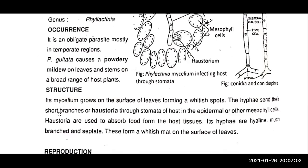The hyphae send their short branches called haustoria through stomata, accessing the epidermal and other mesophyll cells. Haustoria are used to absorb food from the host tissues. Its hyphae are hyaline, much branched and septate, forming a whitish mass on the surface of the leaves.